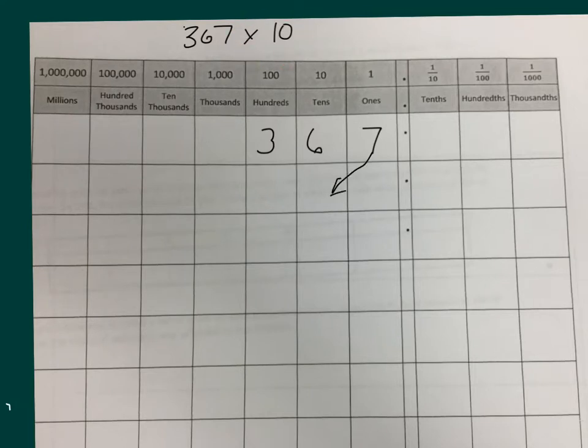So the 7 gets shifted to the 10s place. 7 ones become 7 tens, or 70. And as you can see, we also can move the other two digits. What do we place in the ones place? Right, we need a placeholder, a 0.